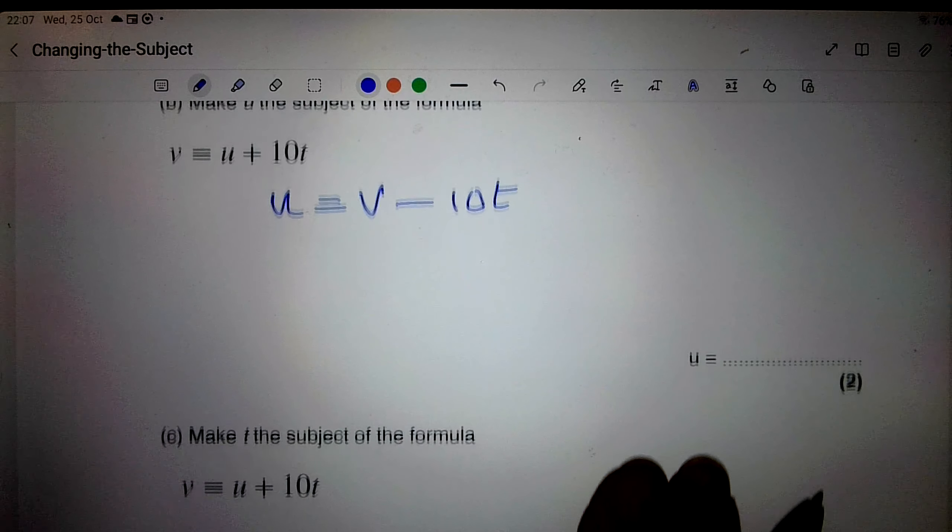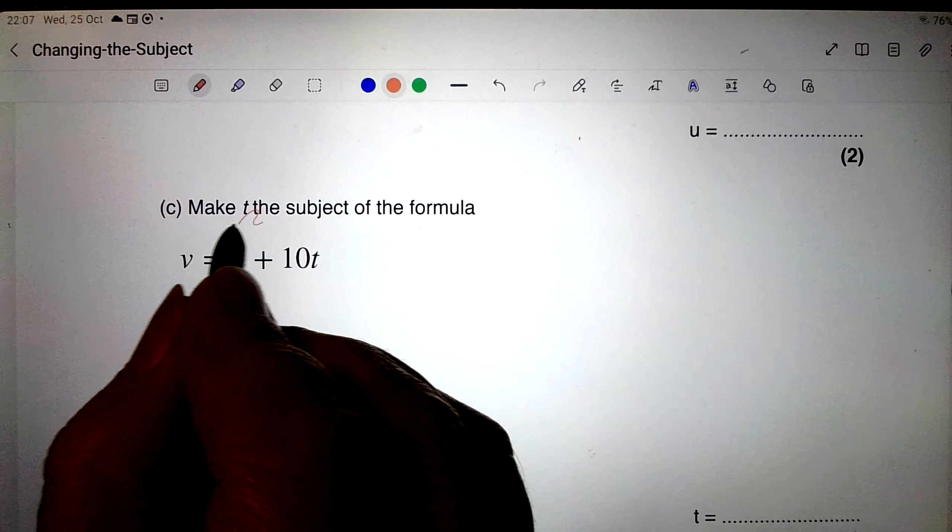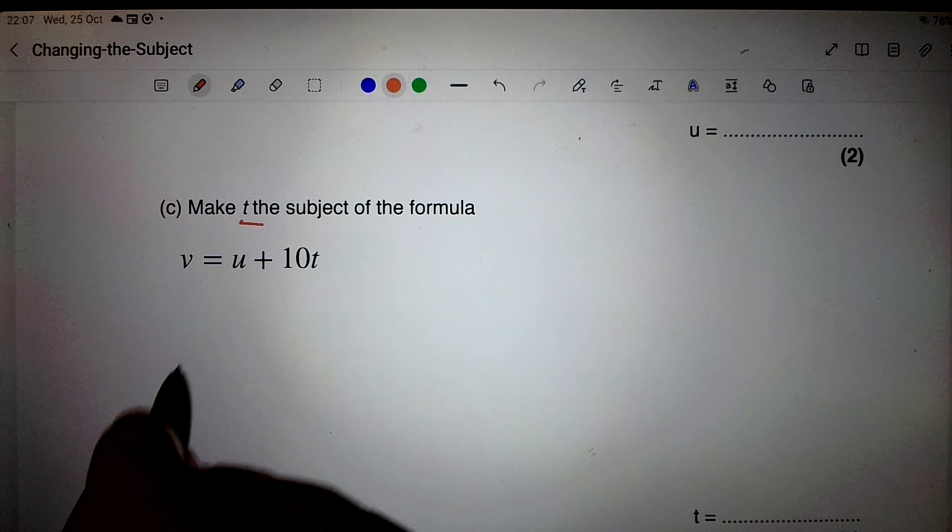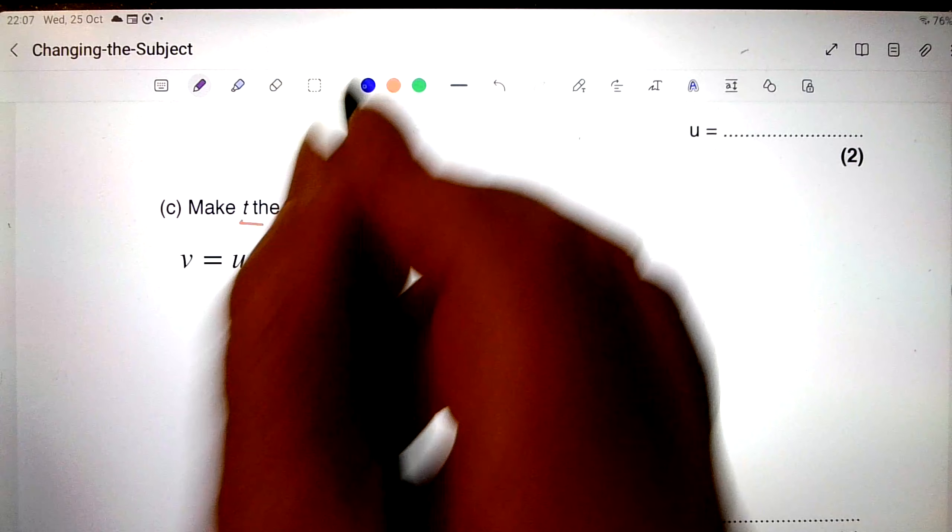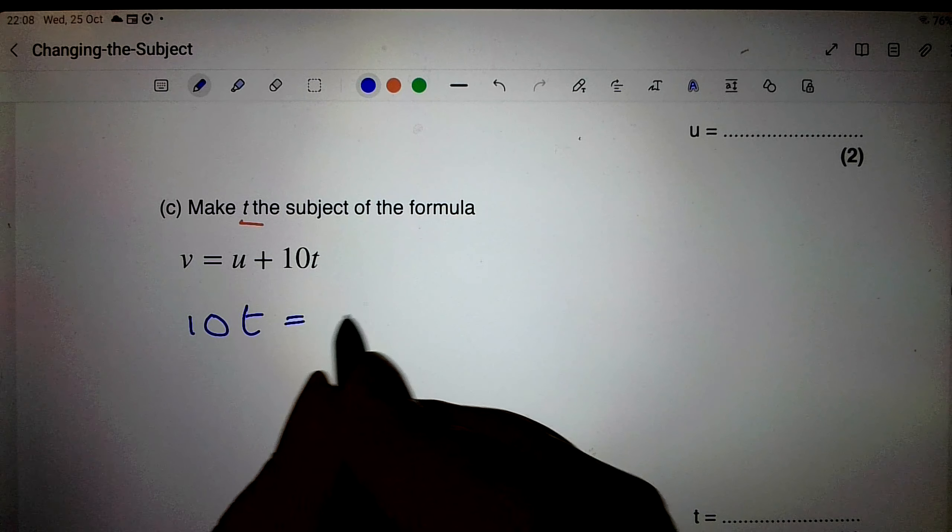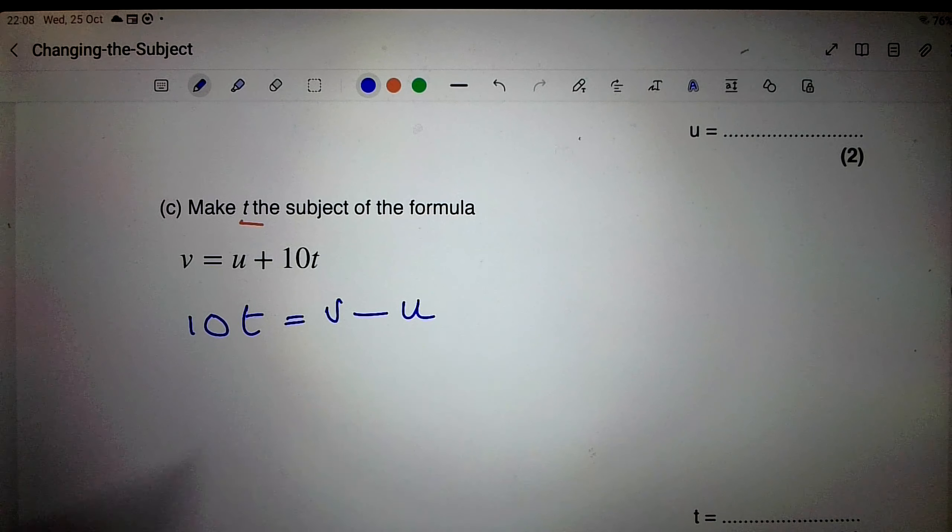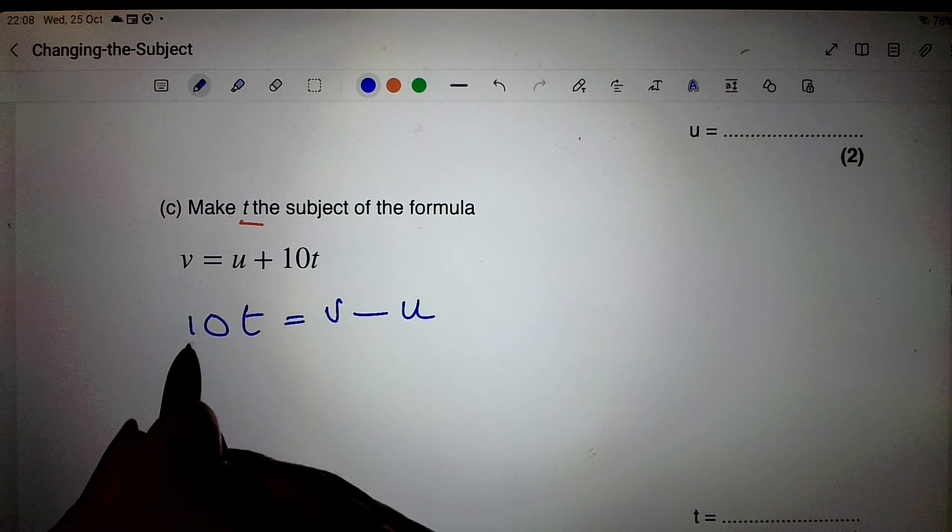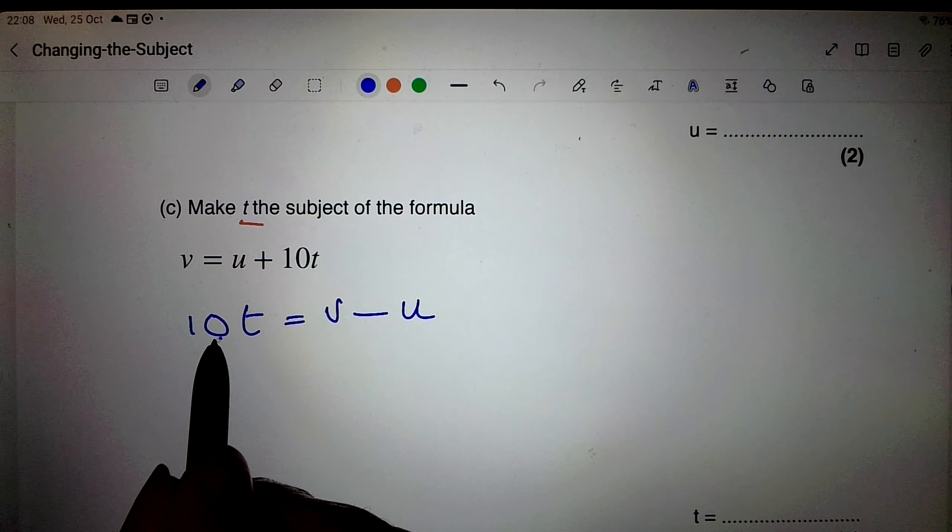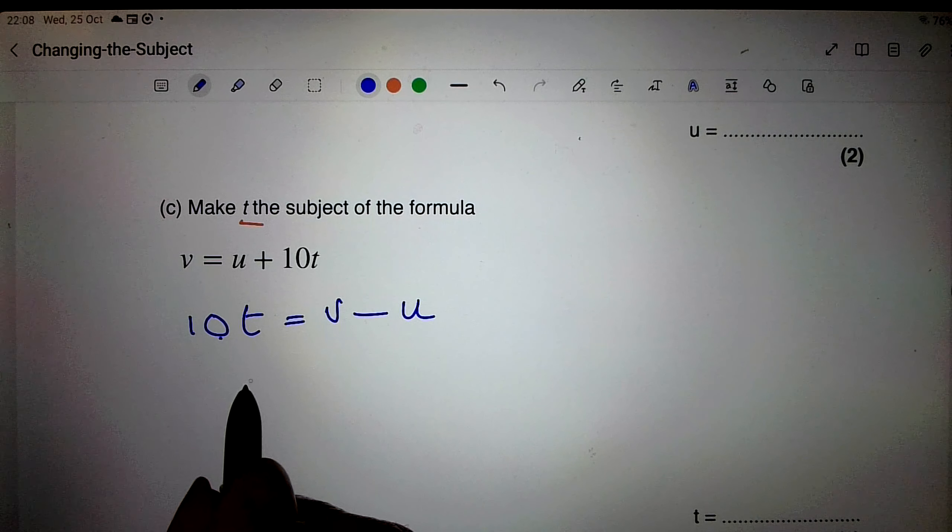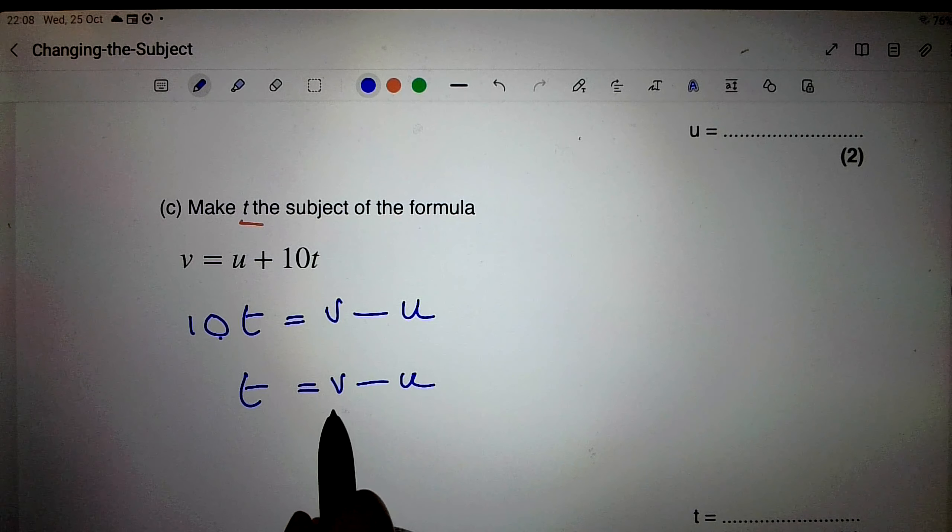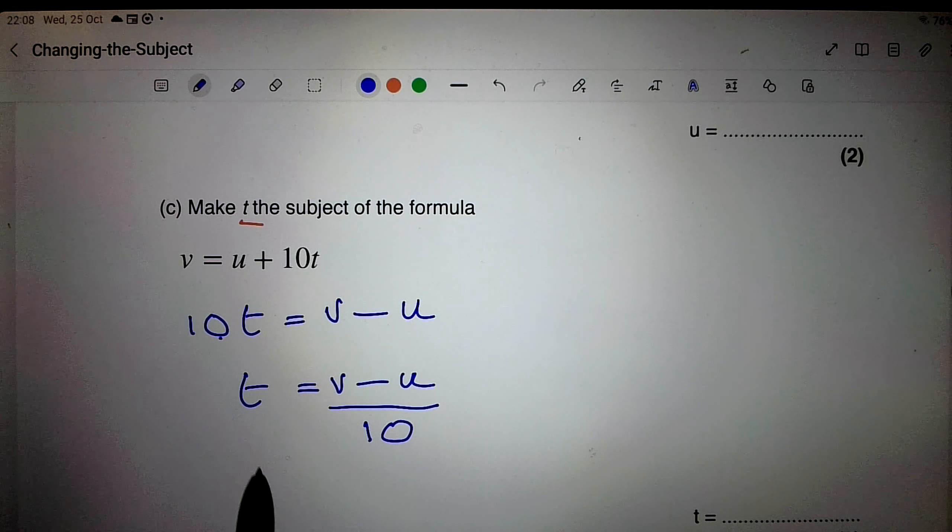Right, let's look at part c now. It says make t the subject of the formula. Well, I'm going to make this into, first of all, 10t equals v minus u. That's my first step. And then I can get rid of the 10 from there. Change the side, change the sign, multiplying here, it divides everything on the other side. So I've got t equals v minus u, all divided by 10. And there's my final answer.